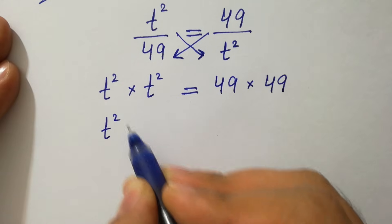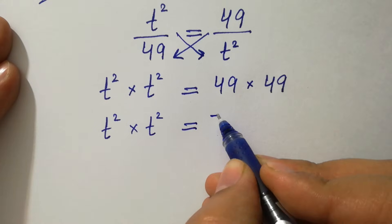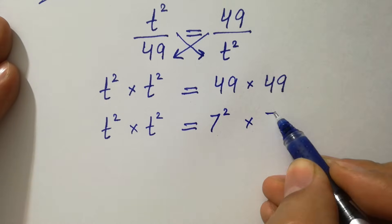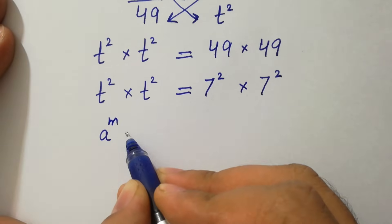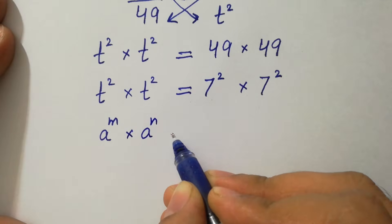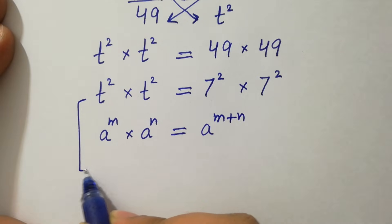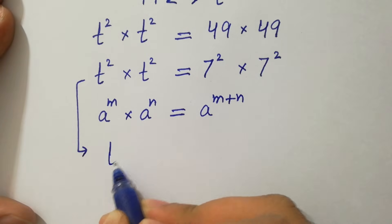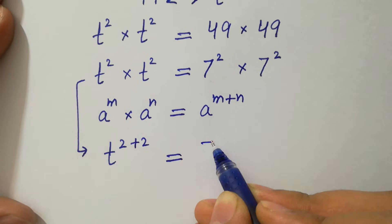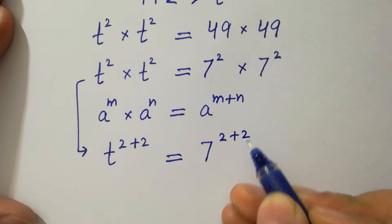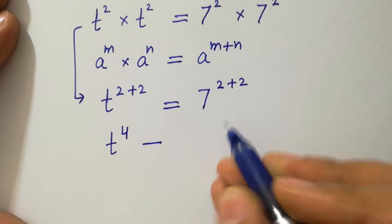t² times t² equals 49, which is the same as 7² times 7². Since a to the power m times a to the power n equals a to the power m plus n, it will be t to the power 2 plus 2, equal to 7 to the power 2 plus 2.